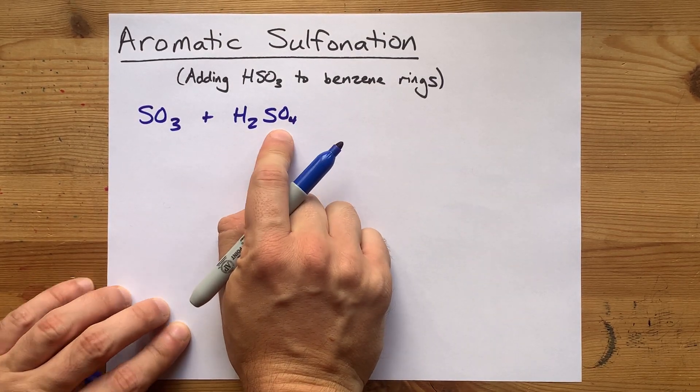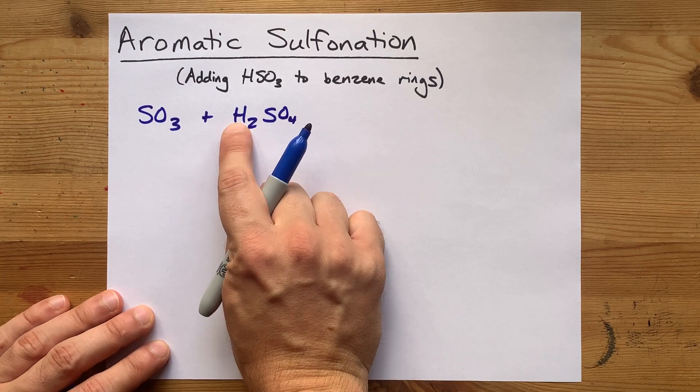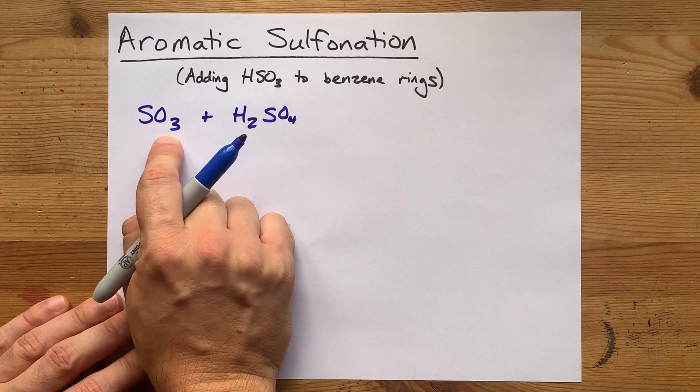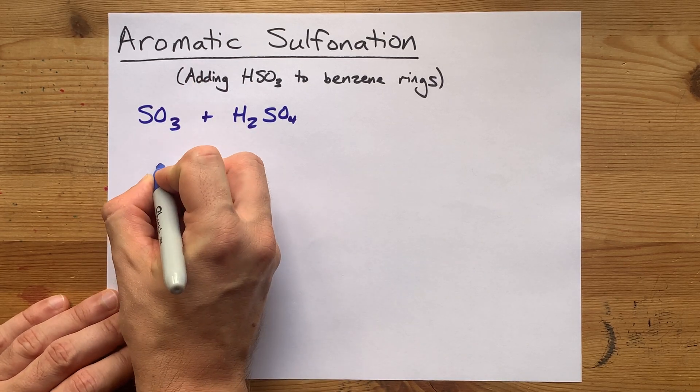Sulfuric acid, H2SO4, tries to give away one of its H's at a very, very high rate, and it can even do so to SO3 or sulfur trioxide.